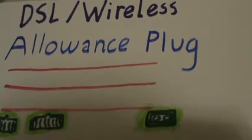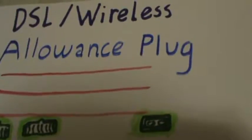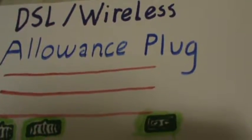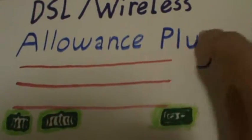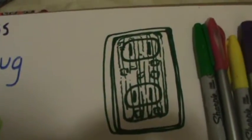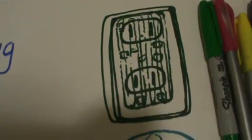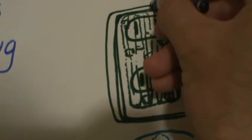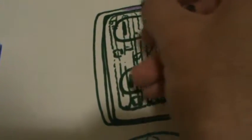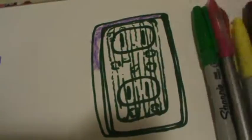Hello everyone. I'm going to show you the allowance plug coloring activity. I drew a few lines right here for the allowance plug. Talking about DSL and wireless — the wireless plug is a name I came up with for a type of plug. Most of us are familiar with smartphones like iPhone 5s, 6s, or Android — it's basically a plug that would be pre-installed into it.